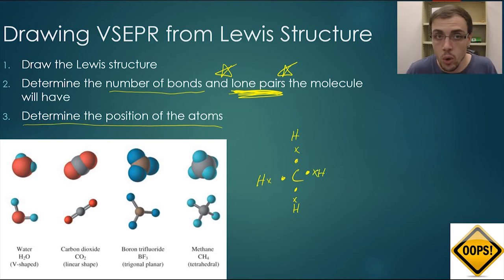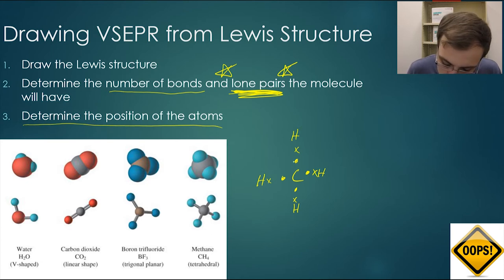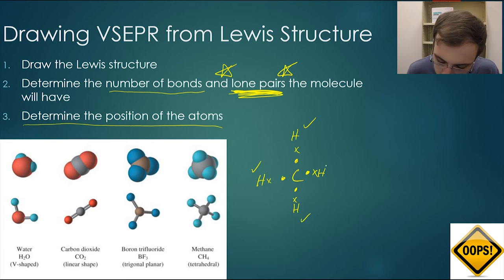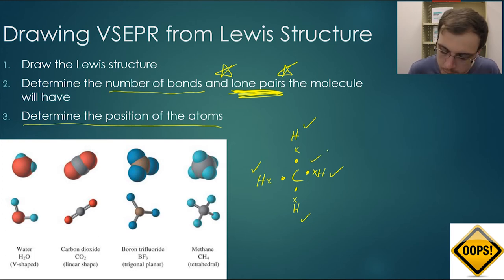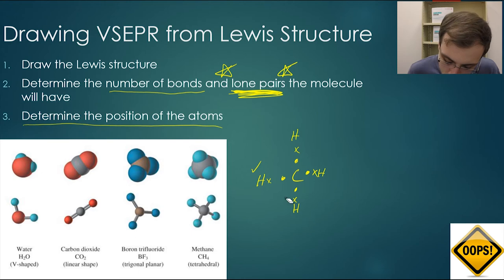We now quickly check to make sure all the elements are happy. Each hydrogen has two electrons — yes. Carbon in the middle has one, two, three, four, five, six, seven, eight electrons — carbon is happy. That tells us we have correctly drawn our Lewis structure.